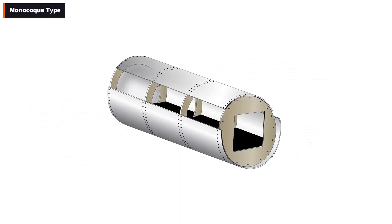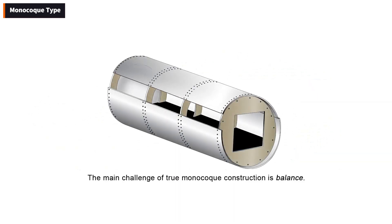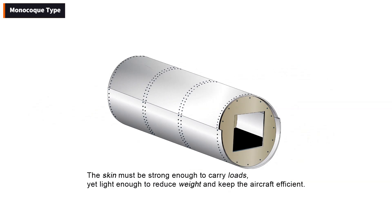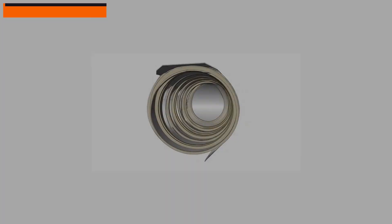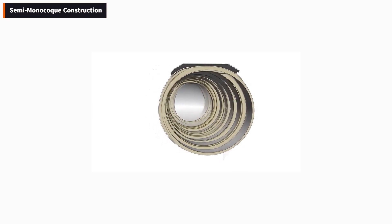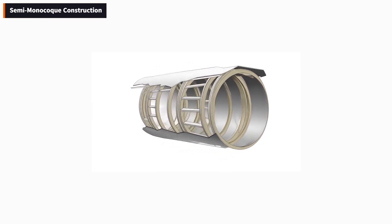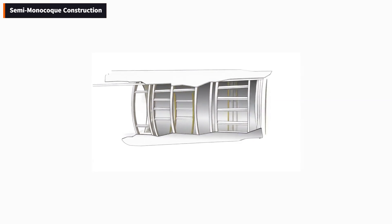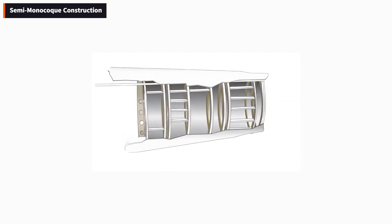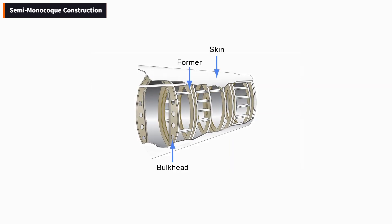The main challenge with true monocoque construction is balancing strength with weight. The skin has to be strong enough to handle loads yet light enough to avoid making the aircraft too heavy. To solve this strength-to-weight challenge, engineers developed semi-monocoque construction. This design still uses frames, bulkheads, and formers, but adds longerons and stringers — long, stiff structural members running along the fuselage.